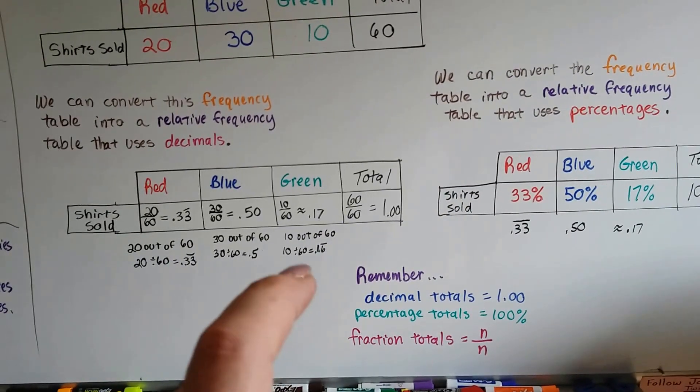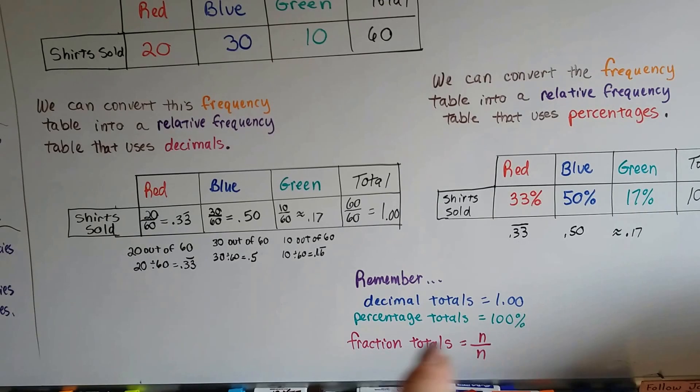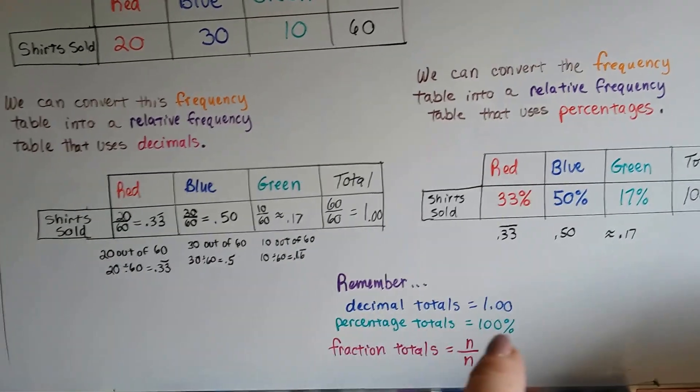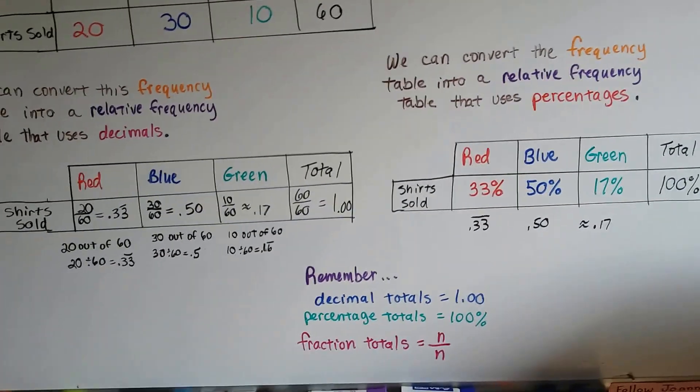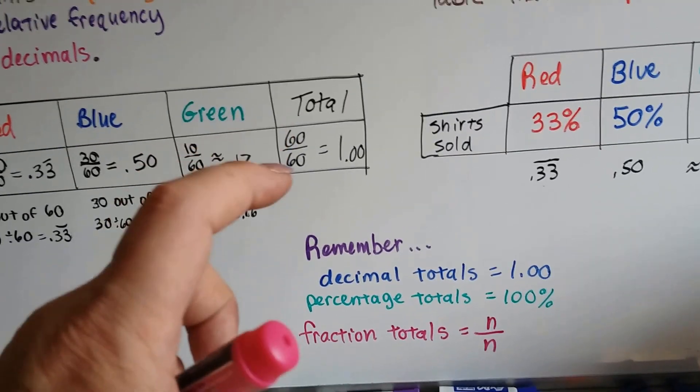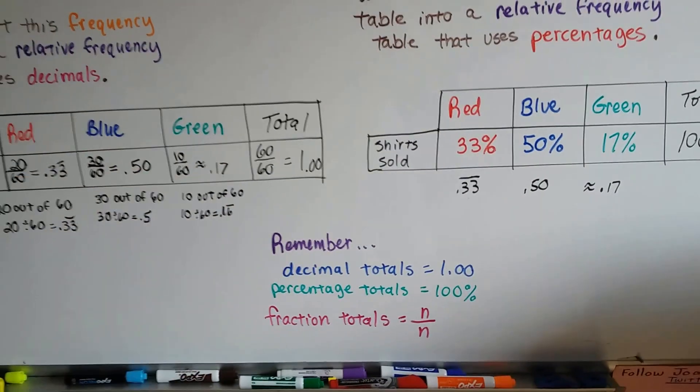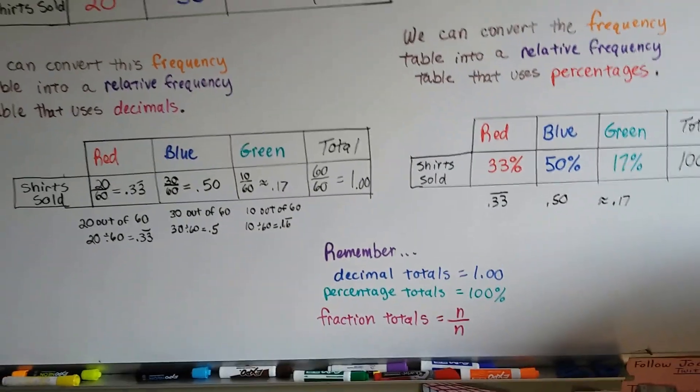So just remember, when the decimal gets totaled, it should be 1.00. For percentage totals, it should be 100%. And any fraction totals should be the same numerator as denominator, like the 60 over 60. So it's got to have the same numerator and denominator, so it'll equal 1.